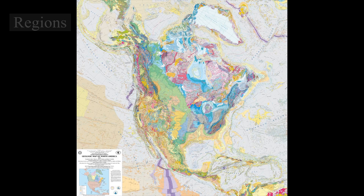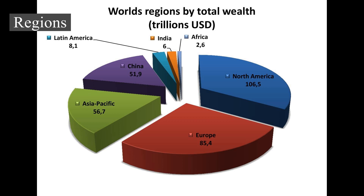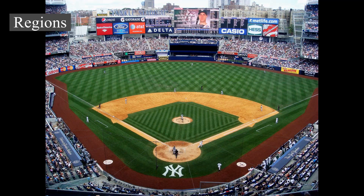Geographically, the North American continent has many regions and subregions, including cultural, economic, and geographic regions. Economic regions include those formed by trade blocs, such as the North American Trade Agreement block and Central American Trade Agreement. Linguistically and culturally, the continent could be divided into Anglo-America and Latin America. Anglo-America includes most of Northern America, Belize, and Caribbean islands with English-speaking populations, though subnational entities such as Louisiana and Quebec have large francophone populations. In Quebec, French is the sole official language.